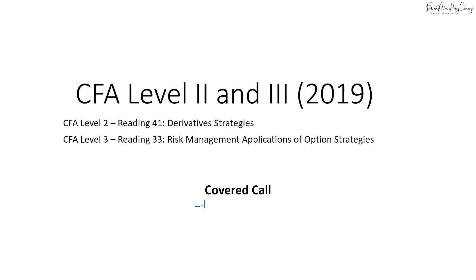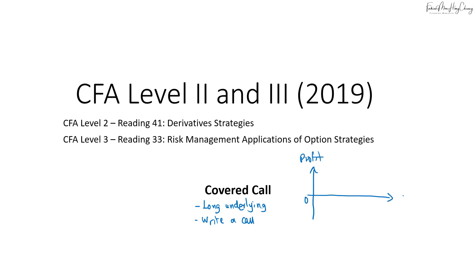For the covered call strategy, it involves a long position in the underlying and you need to write a call option. The payoff diagram of the strategy looks like this: we have the profit and loss on the vertical axis and the spot price at expiration on the horizontal axis. There is a flat horizontal line and then a downward line, where this point is the exercise price of the call option. The maximum profit is at this point here, and the break-even price is here.